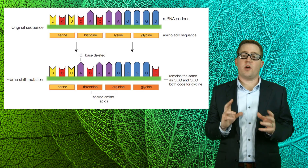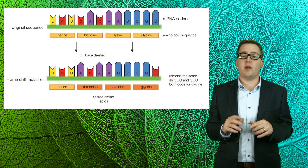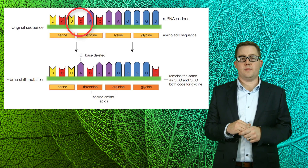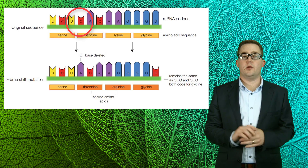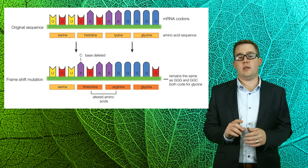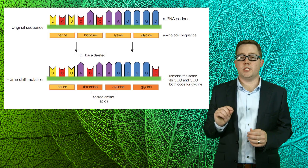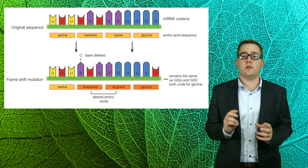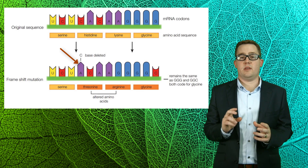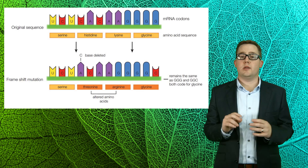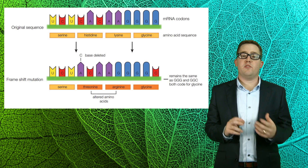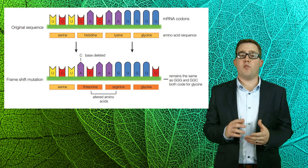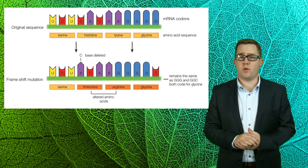In this example we have an original strand and below it a frame shift mutation — a C has been deleted from the strand. The original strand used to read UCUCACAAGGG. With the C deleted it now reads UCUCACAAGGGG. This frame shift of the codons has severely changed the coded amino acids and will therefore more than likely have a serious effect on the overall protein.